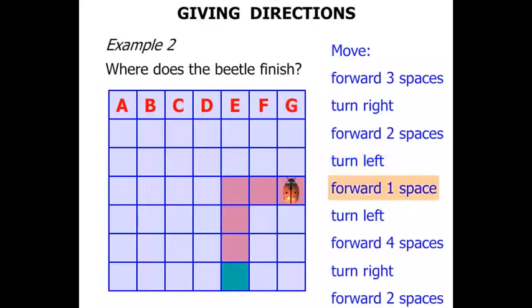Then the beetle is going forward one space. The beetle is to turn left again. Watch carefully. Then forward four spaces. One, two, three, four.